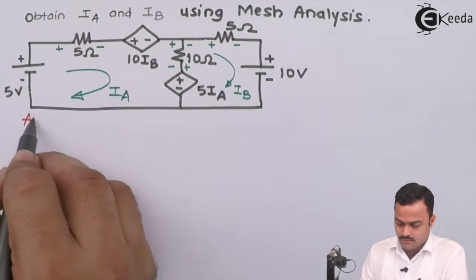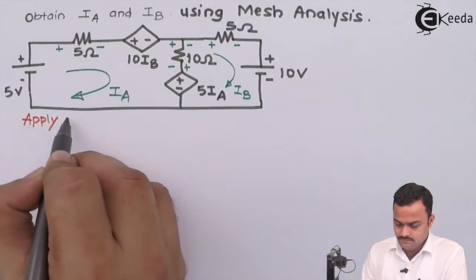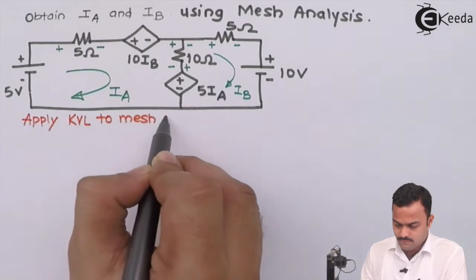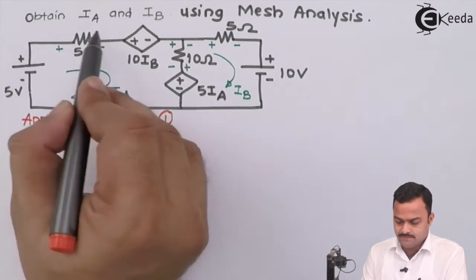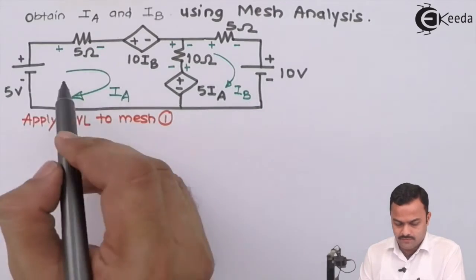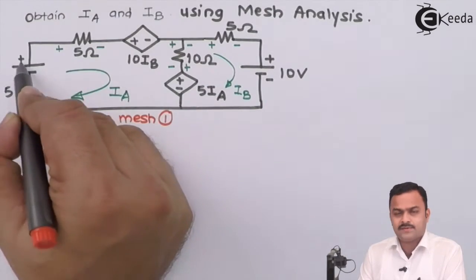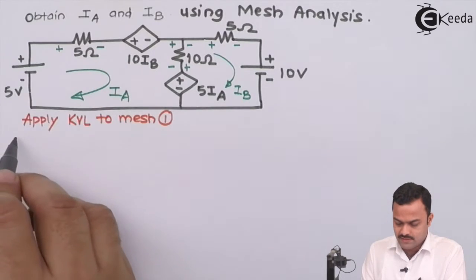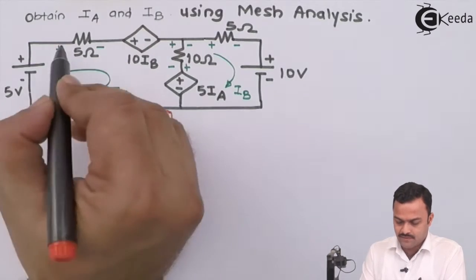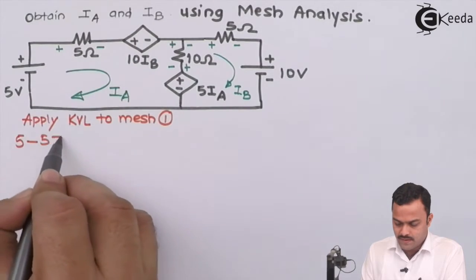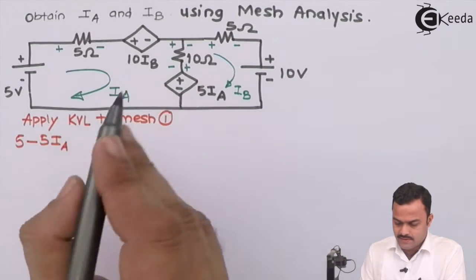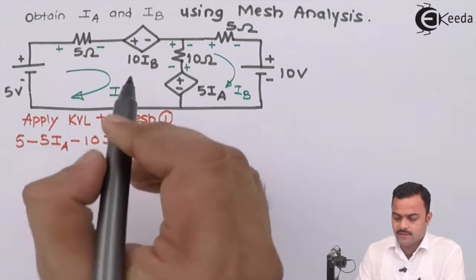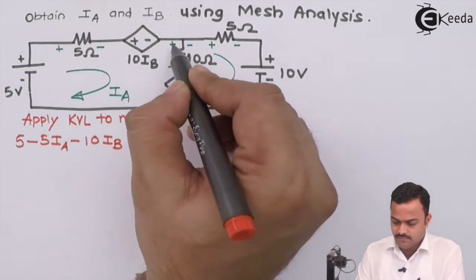Let's apply KVL to Mesh 1. Starting from here, we encounter a voltage source minus-to-plus, so it's a voltage rise: plus 5. Then plus-minus gives minus 5·Ia. Then plus-minus gives minus 10·Ib. Remember, it is a current-controlled voltage source.